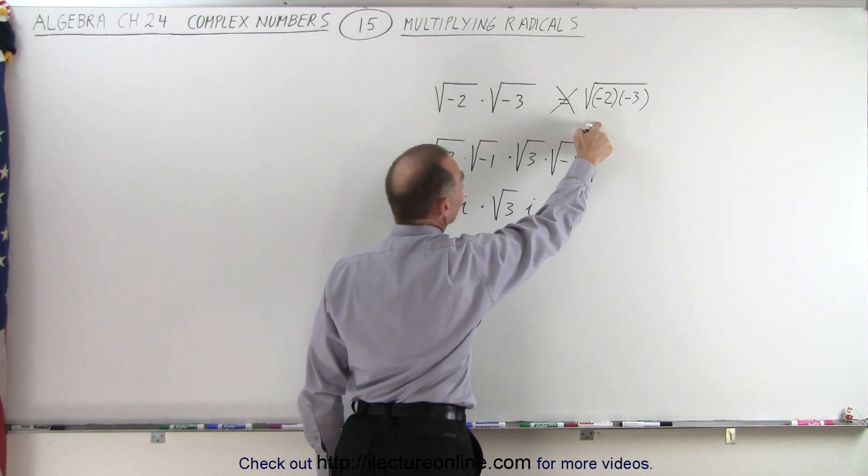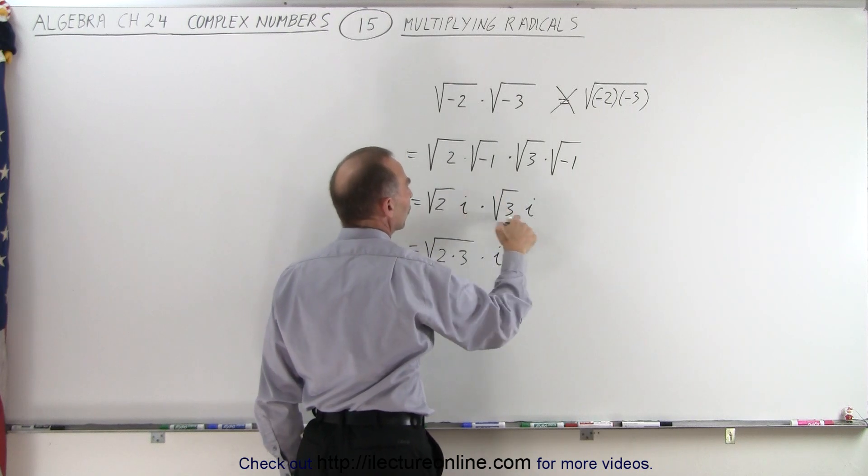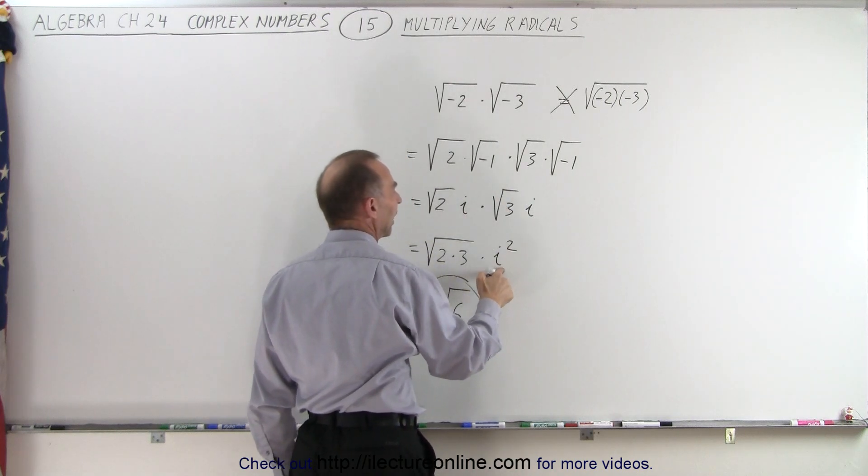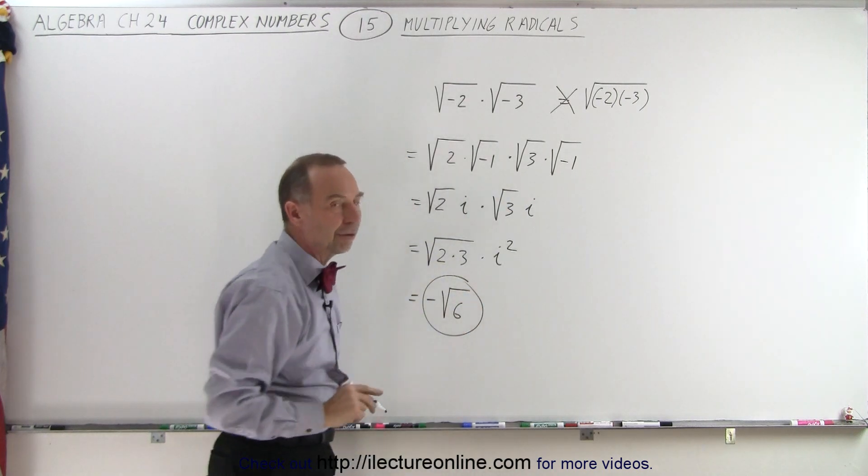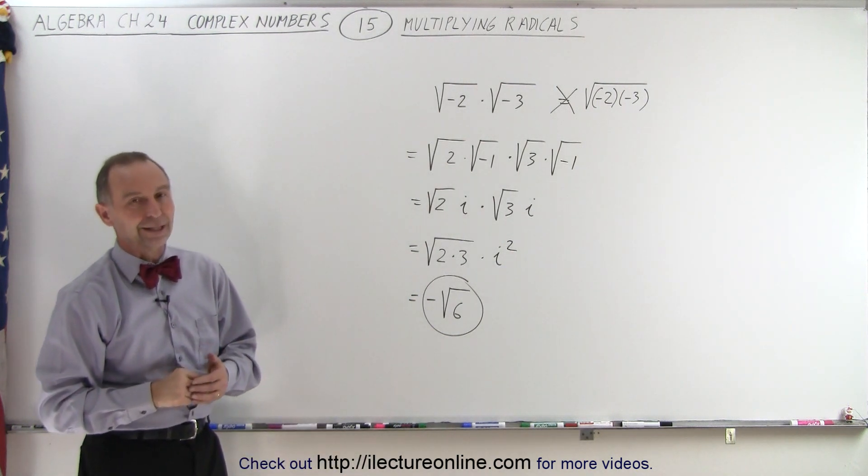So notice, don't do it like this, do it like this. Break out the square root of negative 1, then turn those into i's, then when you multiply, i squared gives you negative 1, and therefore you get the negative square root of 6. And that is how it's done correctly.